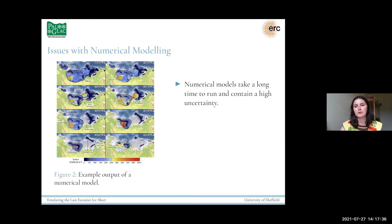The issues with numerical modelling is that they take a very long time to run and contain high uncertainty. The uncertainty often comes with, you have a set of input parameters you have to include in your numerical models, things like parameters for basal sliding laws and ice flow laws. This is where our uncertainty comes from, because these are not known explicitly. They're also computationally expensive.